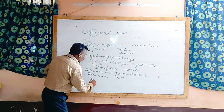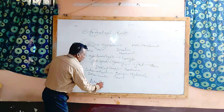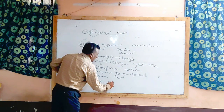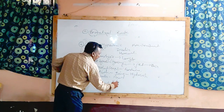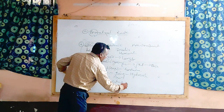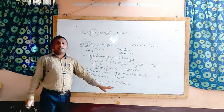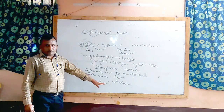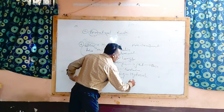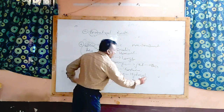Intrathecal route of administration: where drugs are injected into the spinal cord directly. Intraperitoneal route: where drugs are injected directly into the peritoneal cavity. Intraspinal route: where drugs are injected into the spinal cord under extreme emergency conditions.